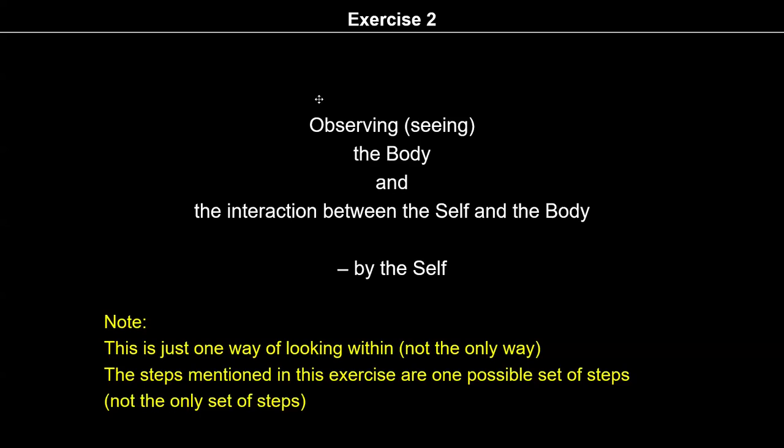This difference is very important: observing means we are directly observing the units — conscious units and material units, for example the body. We are not rationally thinking about it. In Exercise 1, with the help of 7 steps, we tried to directly observe consciousness. Those 7 steps are designed to help you see your consciousness in a direct manner, not rationally. Similarly, Exercise 2 also has 7 steps which will help you observe the body and the interaction between the self and the body.